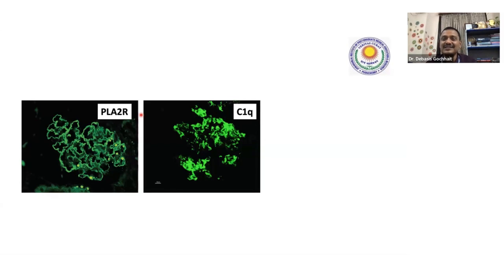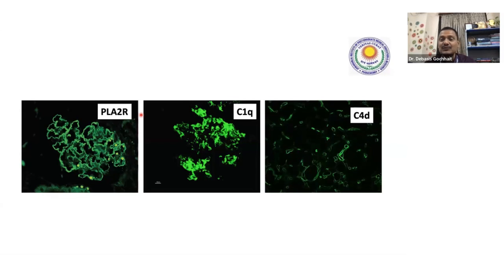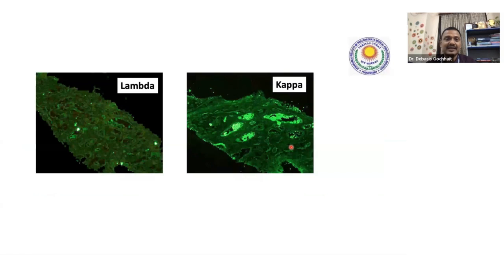C1Q positivity is frequently seen in which autoimmune disease common in young females? It is lupus nephritis. C1Q is done in kidney biopsies but not required for skin biopsies. This is C4D: C4D is done for ABMR — antibody-mediated rejection — in kidney biopsies. Where do you see it? In the peritubular capillaries — here you can make out they are positive in the peritubular capillaries.